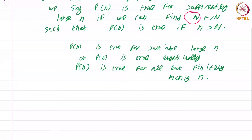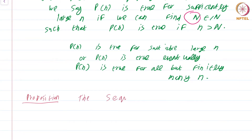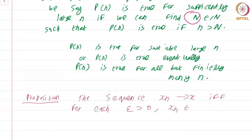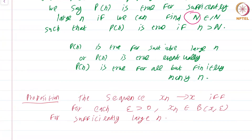Now that we have this additional terminology, the definition of convergence becomes rather easy, which I state as a proposition and leave as an exercise, because it is just a matter of unwinding the definitions. The sequence x_n converges to x if and only if for each epsilon greater than 0, x_n is an element of B(x, epsilon) for sufficiently large n. This is just a reformulation and, as you can see, we have gained a great economy in our expression.